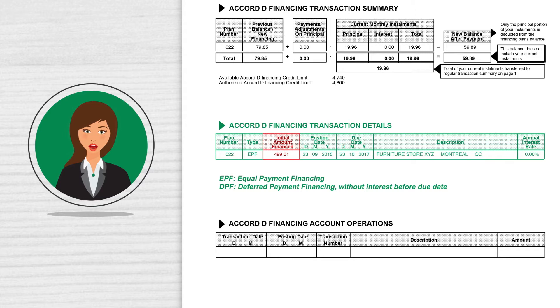You'll find the initial amount financed and the due date for the total loan repayment, whether by an equal monthly installment plan or a deferred payment plan like buy now and pay later.